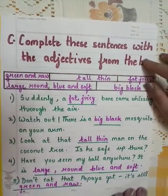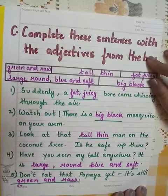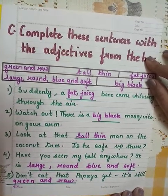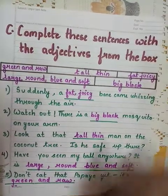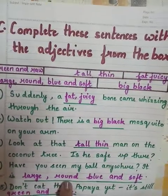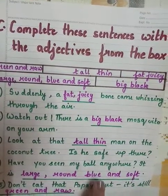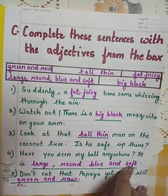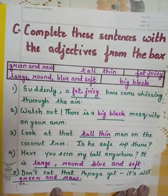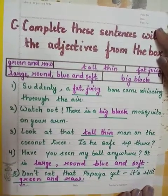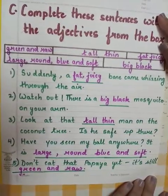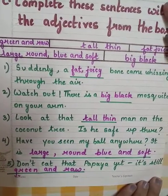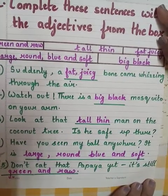Number 4: Have you seen my ball anywhere? It is large, round, blue and soft. Number 5: Don't eat that papaya yet. It is still green and raw.